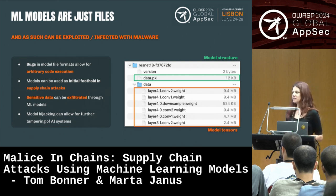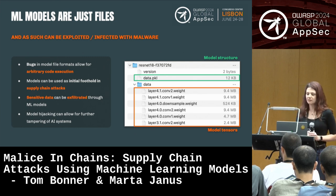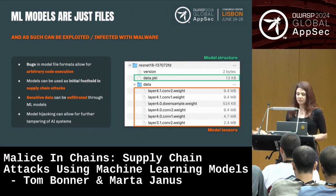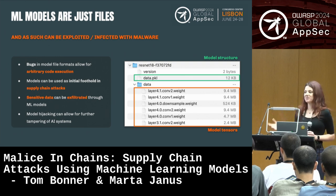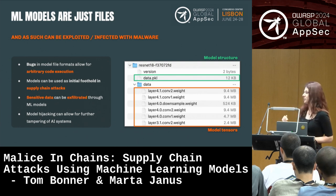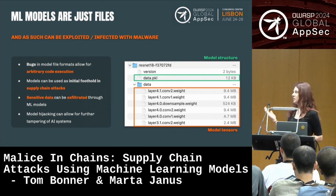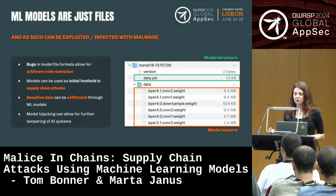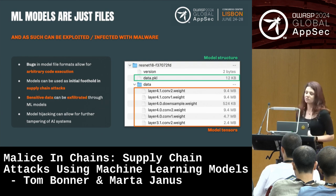First of all, we start with defining what a model is. A machine learning model is basically the result of very complex computations run on huge amounts of data. But at the end of the day, those models have to be stored on a disk and transferred over a network — so they have to be serialized as files. From the security perspective, machine learning models are nothing else than files. And files can be infected with malware, exploited, and abused in many ways. We found a few different ways that it can be done really easily, and it's still flying under the radar because there is no security around it.